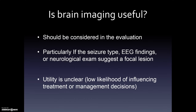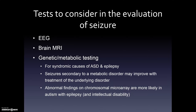Another test to consider is a brain MRI. Brain imaging is useful if the seizure type, EEG findings, or neurological exam suggest a focal lesion, though its utility in influencing treatment decisions is limited. Genetic and metabolic testing may also be helpful to look for syndromic causes of autism and epilepsy — genetic or metabolic disorders manifesting as both conditions. Abnormal findings on chromosomal microarray are more likely in children with autism plus epilepsy and intellectual disability.